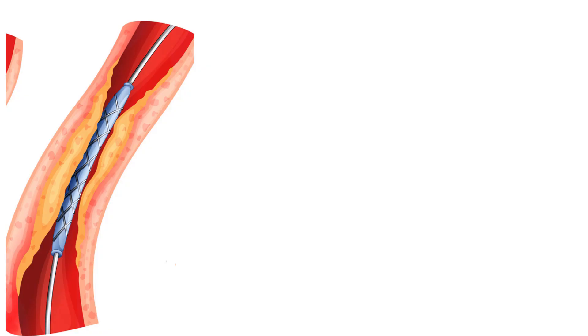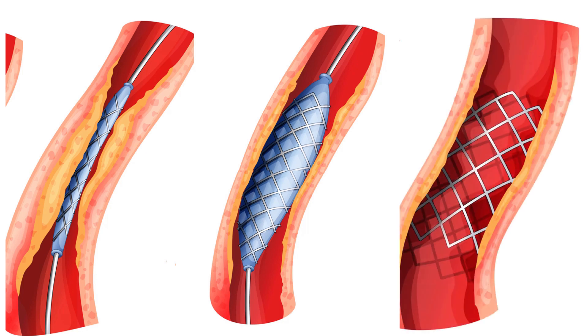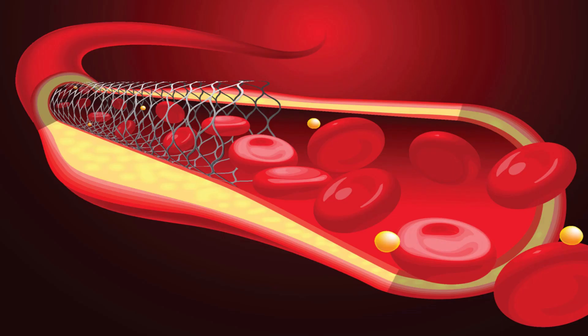Coronary heart disease can be treated by inserting a stent, a metal cage with a balloon inside. The balloon is blown up and then removed, leaving behind the metal cage which holds open the coronary artery. This increases blood flow to the heart, more oxygen to heart muscle and less chance of a heart attack. We can see here the stent inside the coronary artery pushing it open and allowing blood flow.